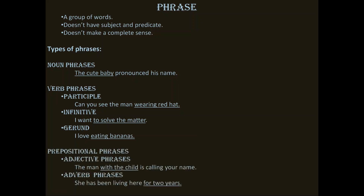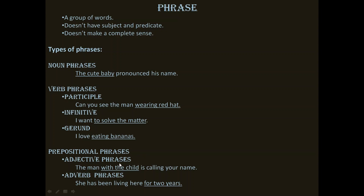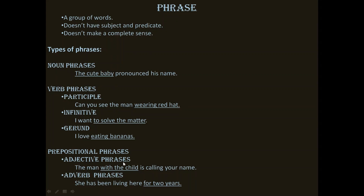Now let us go to the third type: prepositional phrases. In prepositional phrases we have got two types. First, adjective phrases. For example: 'The man with the child is calling your name.' Here, 'with the child' is a group of words that qualifies 'the man.' Words or phrases that qualify or tell something about a noun or pronoun are called adjectives. So 'with the child' is a phrase working as an adjective — it is called an adjective phrase. Now take the next example: 'She has been living here for two years.' Here, 'for two years' is working as an adverb, so this will be called an adverb phrase.